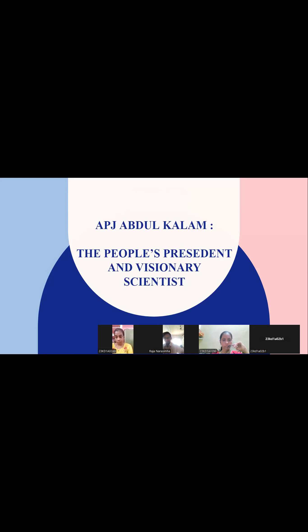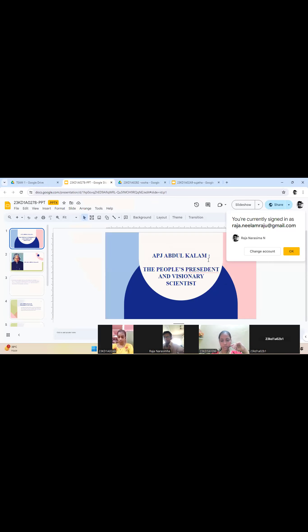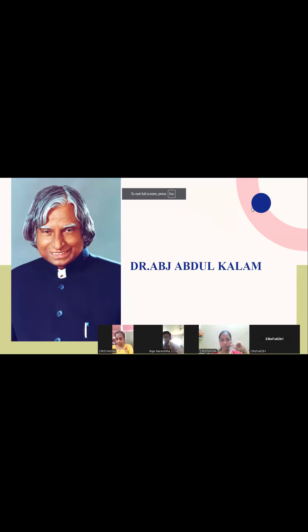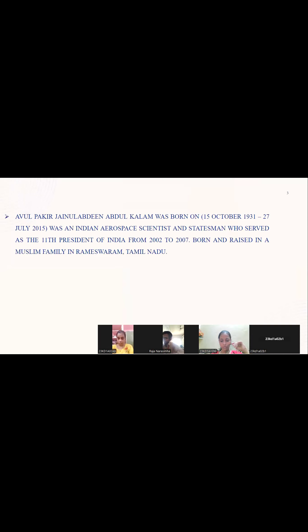Good afternoon, everyone. Myself Yogita. Let me share with you about APJ Abdul Kalam — the people's president and visionary scientist. Avul Pakir Jainulabdeen Abdul Kalam was born on 13th October 1931 and died on 27th July 2015. He was an Indian aerospace scientist and statesman who served as the President of India from 2002 to 2007, born and raised in a Muslim family in Rameswaram, Tamil Nadu.